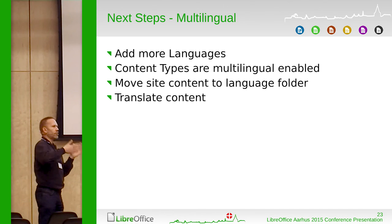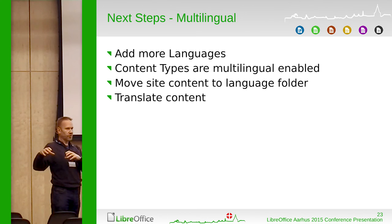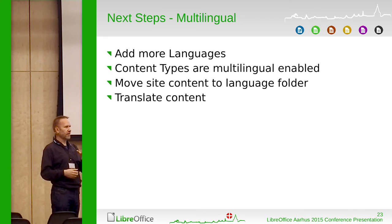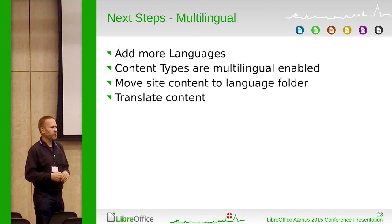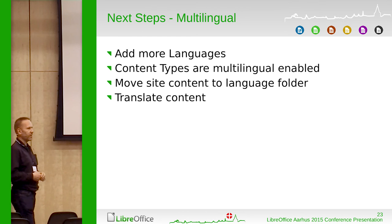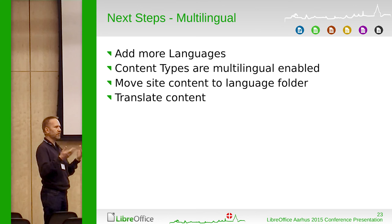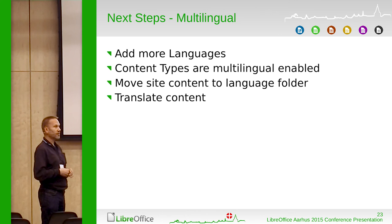When we add more languages, we have to move the content to language folders, which means that users with a different language setting — for example, German in the browser — will not see the English content. So the content has to be translated. Many things can be done with machine translation, and the add-ons themselves can be translated using PO files, so it's not that difficult — it's the normal localization process.